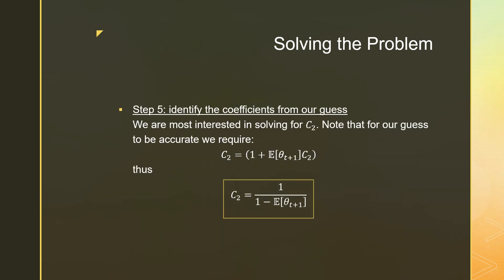Step number five is that we're going to identify the coefficients from our initial guess. So just setting this equal to C_2 = 1 + E[θ_{t+1}]C_2. And that just gives us this nice answer over here, which is 1 over (1 - E[θ_{t+1}]).